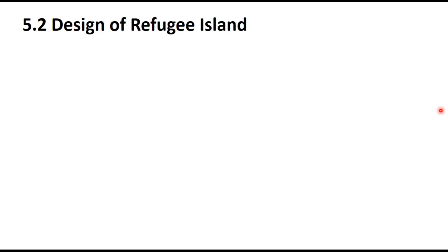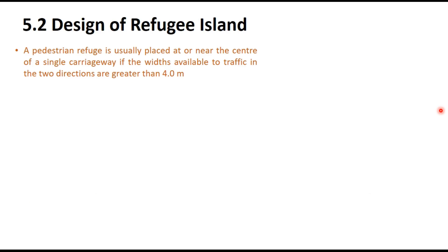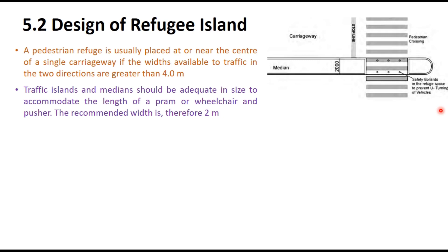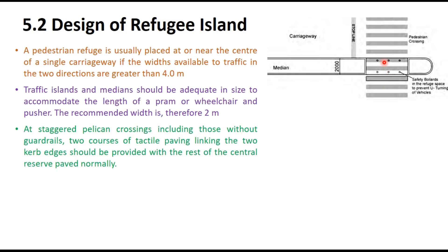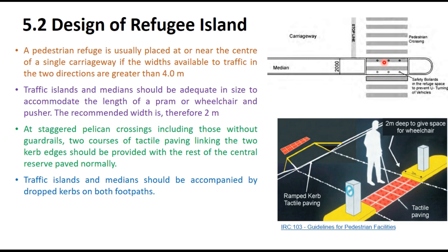Regarding the design of refuge islands, a pedestrian refuge is usually placed at or near the center of a single carriageway if the width available to traffic in both directions is greater than four meters. Traffic islands and medians should be adequate in size to accommodate the length of a pram or wheelchair, and it is recommended that the minimum width of the median be two meters where a refuge island is provided. At staggered pelican crossings, two courses of tactile paving linking the two kerb edges should be provided, and traffic islands and medians should be completed by dropped kerbs on both footpaths.